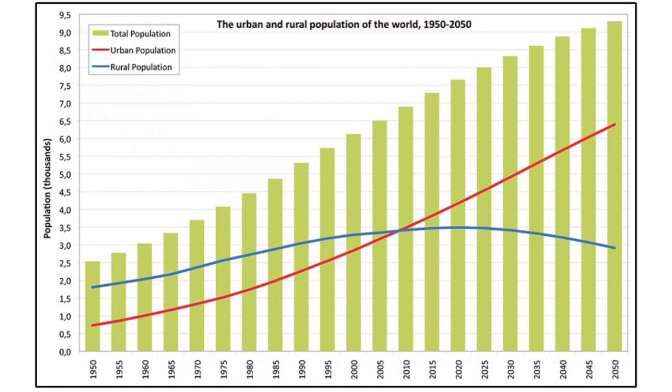The 20th century witnessed the rapid urbanization of the world's population. The global proportion of urban population increased from a mere 13% in 1900 to 29% in 1950, and according to the 2005 revision of World Urbanization Prospects, reached 49% in 2005.